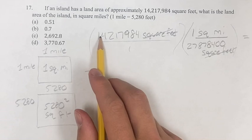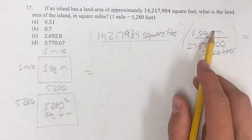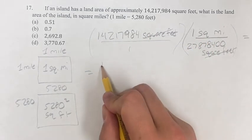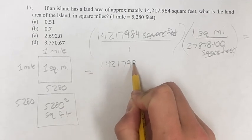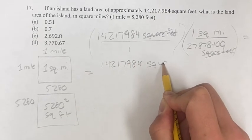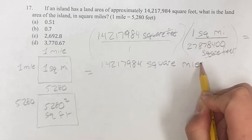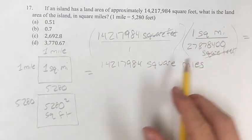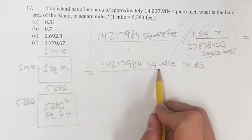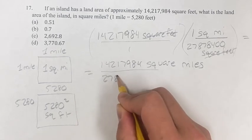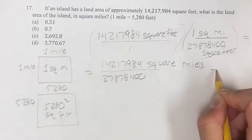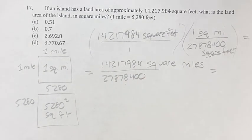left with 14,217,984 in the numerator. I'll write the whole number out. 14,217,984 divided by 27,878,400. This is the area in square miles.